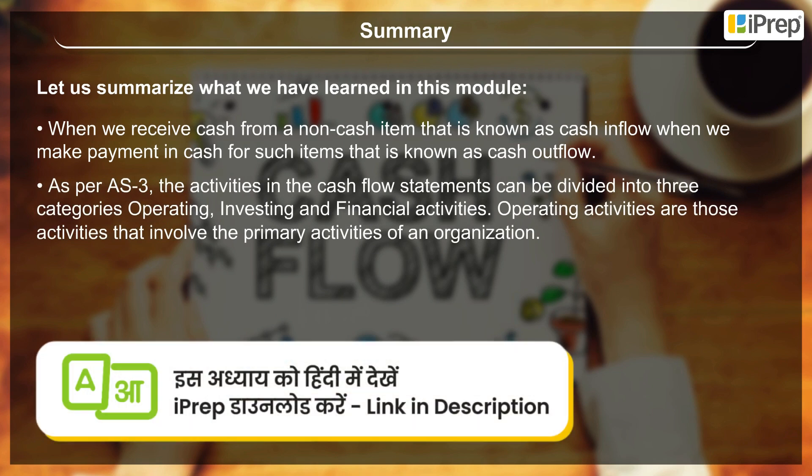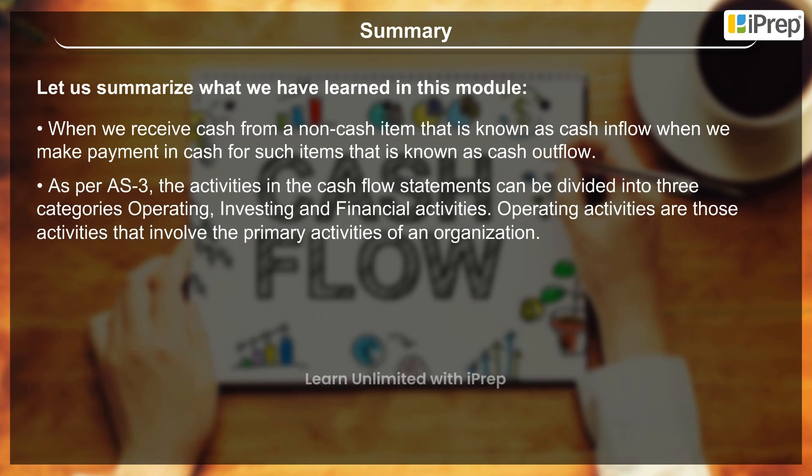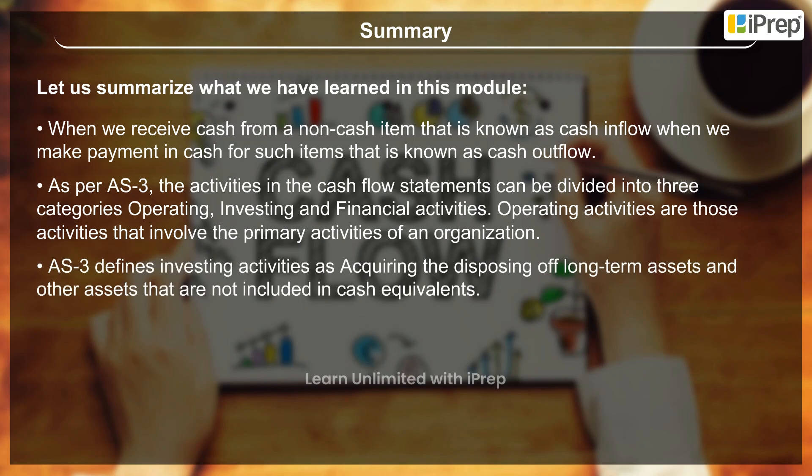As per AS3, the activities in cash flow statements can be divided into three categories: operating, investing, and financial activities. Operating activities are those activities that involve the primary activities of an organization. AS3 defines investing activities as acquiring and disposing of long-term assets and other assets that are not included in cash equivalents.